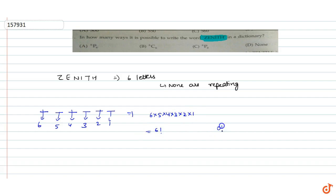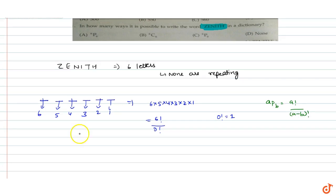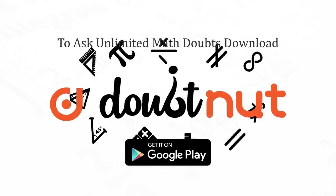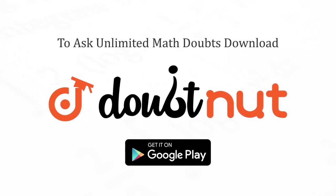We know that 0 factorial is equal to 1. Using the permutation formula, nPr = n! / (n−r)!, we can write this as 6P6 = 6! / 0! = 6!. So the answer is 6P6, and option A is the correct answer.